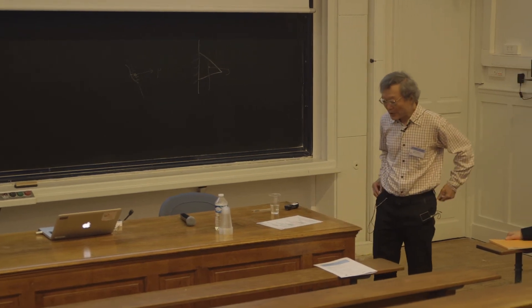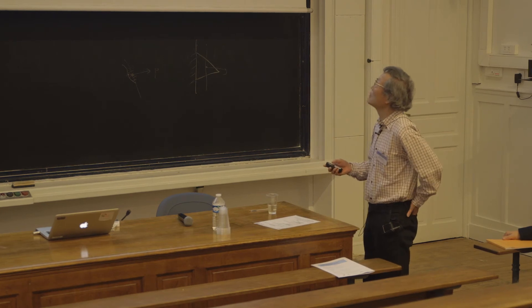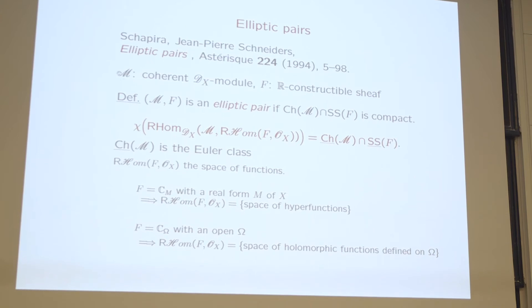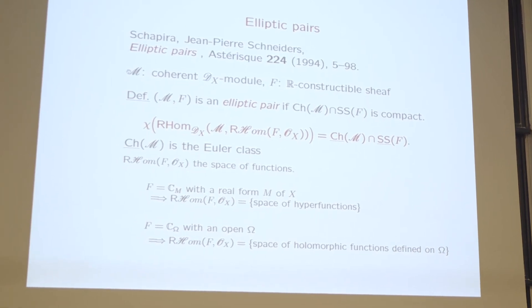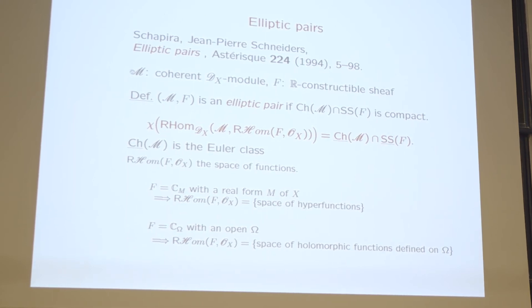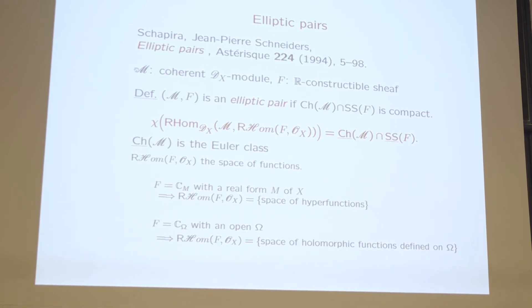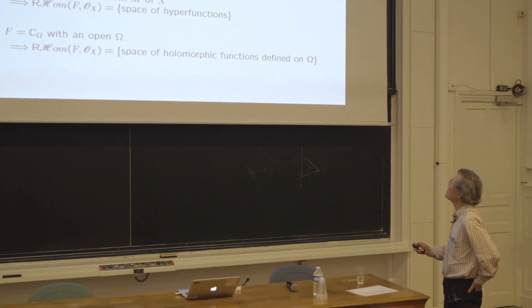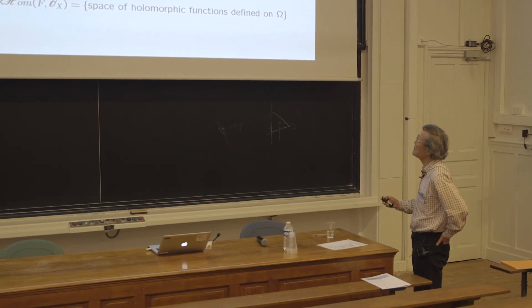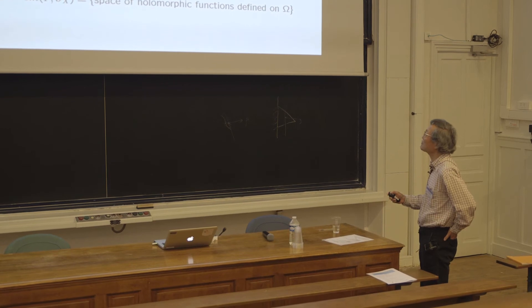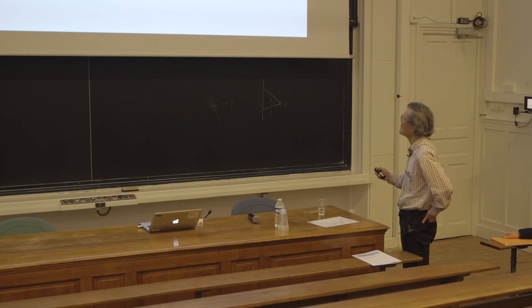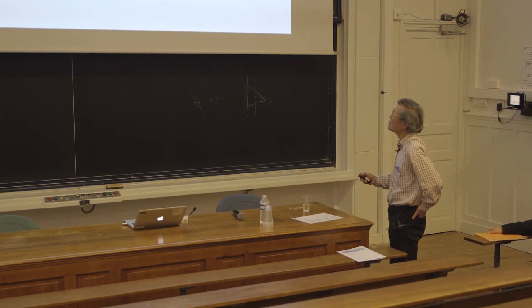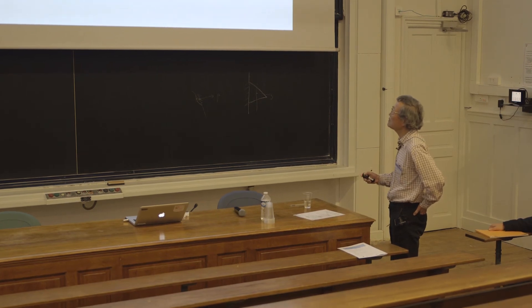The contribution of Shapira, there is another big one, the theory of elliptic pairs. That was a joint work with Schapira-Schneiders. They considered the pair of D-modules and constructible sheaves. Then you consider R-hom F, O-X, and you consider the solution with this value. That is, in fact, under some condition, under some proper condition, this one has finite dimension, and its Euler characteristic can be calculated from the data of M and the data of F.